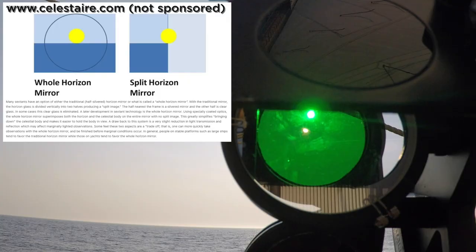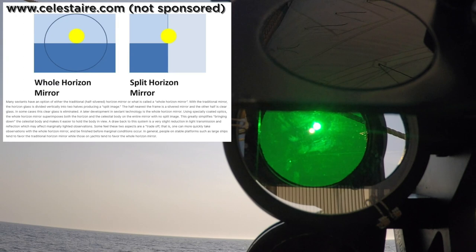First up is the whole horizon mirror which uses specially coated optics to superimpose an image of a celestial body and the horizon.